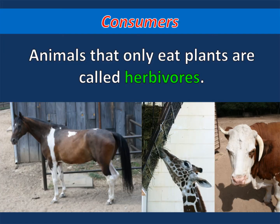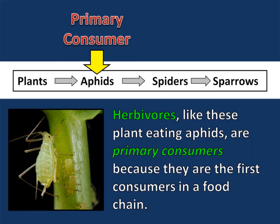Animals that only eat plants are called herbivores. Herbivores, like these plant-eating aphids, are primary consumers because they are the first consumers in a food chain. Remember that plants are producers that make their own food, and not consumers.